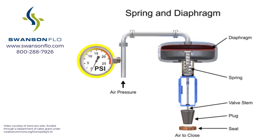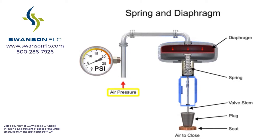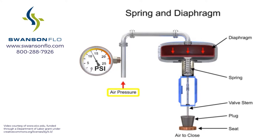A 15 PSI pneumatic signal enters the housing at the top of the actuator. As pressure is exerted on the diaphragm, a downward force is applied against the spring which moves the restrictor. The diaphragm moves until it creates an equal but opposing force against the spring, at which time the motion stops as the plug meets the valve seat.